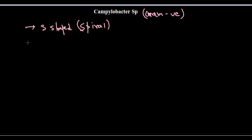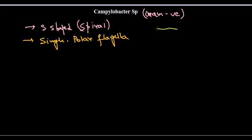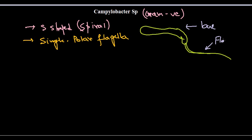These bacteria are found with a single polar flagella. If I draw the structure, Campylobacter looks something like this, and it has a single polar flagella attached to the cell body. They are motile in nature due to this flagella.